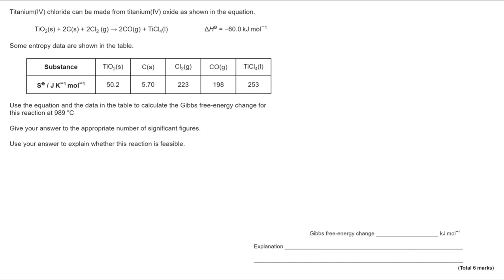Okay, so we're provided with an equation, we're given the enthalpy value negative 60, and we've got the entropy data for each component of it. So we are going through and we're calculating Gibbs free energy delta G at 989 degrees Celsius.